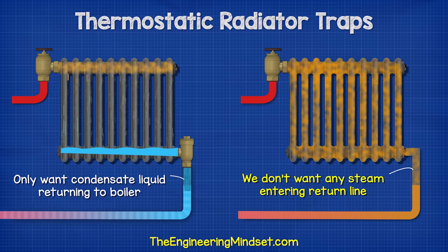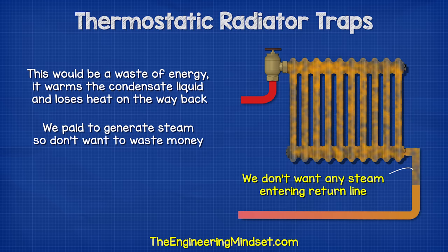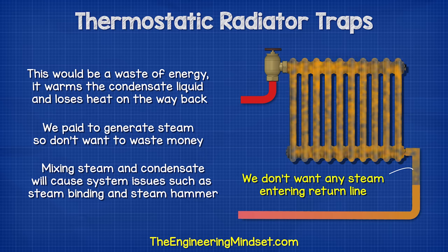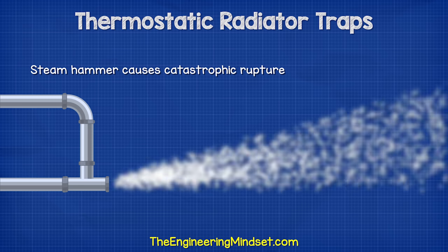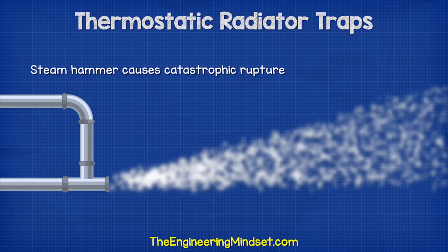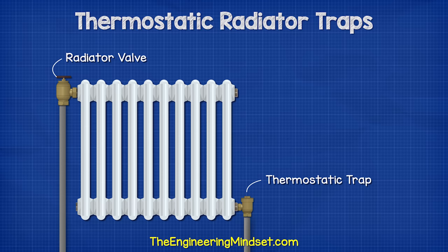We only want condensate liquid returning to the boiler — we don't want any steam getting into the return line. That would waste energy by warming the condensate and losing heat on the way back. Mixing steam and condensate also causes many problems such as steam binding and steam hammer, which can be catastrophic for the system. One way to prevent this is through a thermostatic radiator trap.